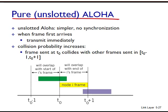The slotted ALOHA protocol required that all nodes synchronize their transmissions to start at the beginning of a slot. The first ALOHA protocol was an unslotted and fully decentralized protocol. In pure ALOHA, when a frame first arrives — that is, a network datagram is passed down from the network layer at the sending node — the node immediately transmits the frame in its entirety into the broadcast channel. If a transmitted frame experiences a collision, the node will immediately retransmit with probability P. Otherwise, the node waits for a frame transmission time, then retransmits with probability P or waits for another frame time with probability 1-P.